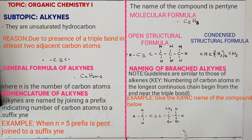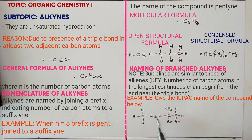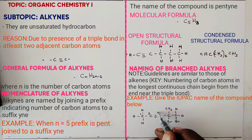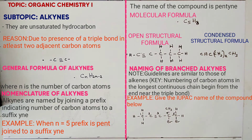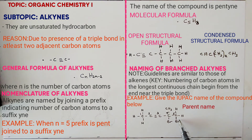If I begin from the right-hand side, the triple bond is on carbons 4 and 5. Therefore, numbering begins from the left-hand side — 1, 2, 3, 4, 5 — taking the lowest number. So the parent name becomes pent-2-yne. The branches present are two bromo branches and one methyl branch.